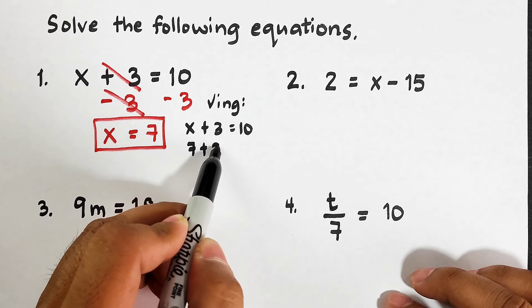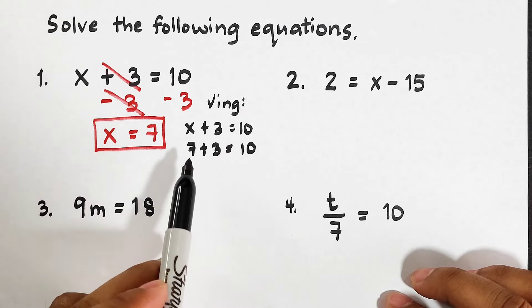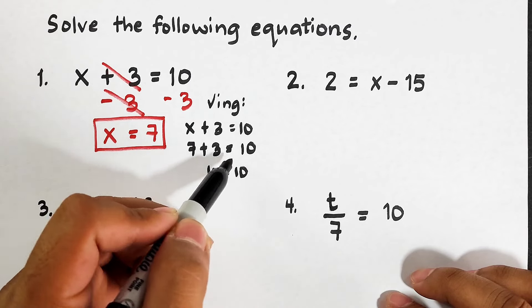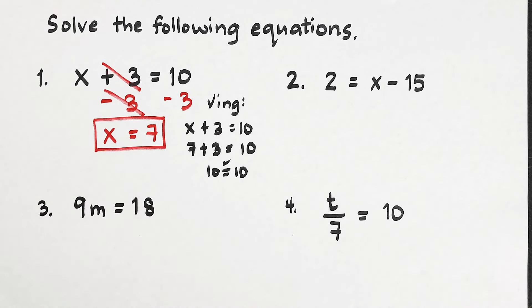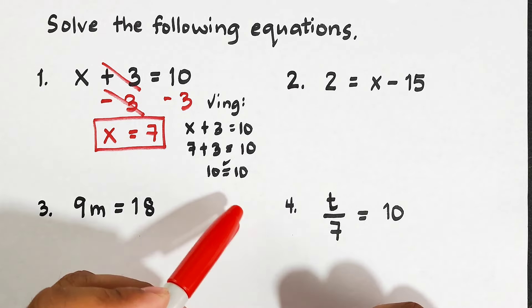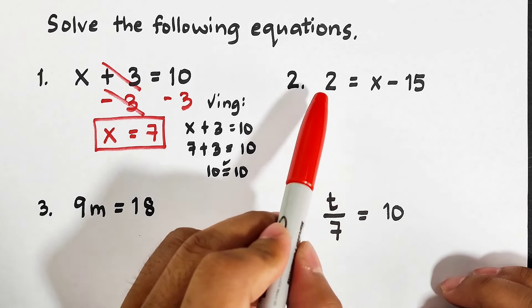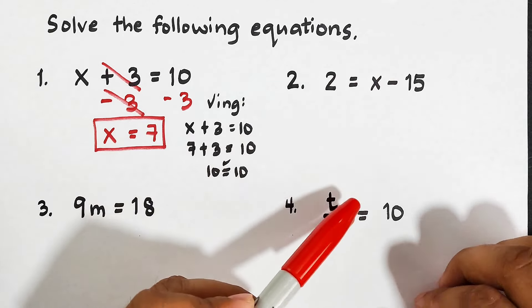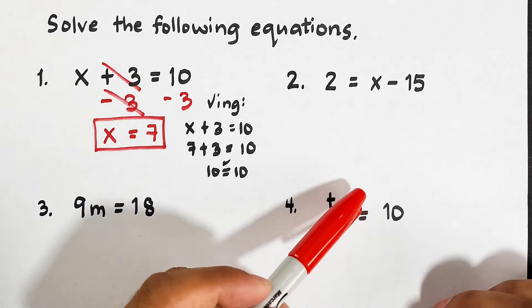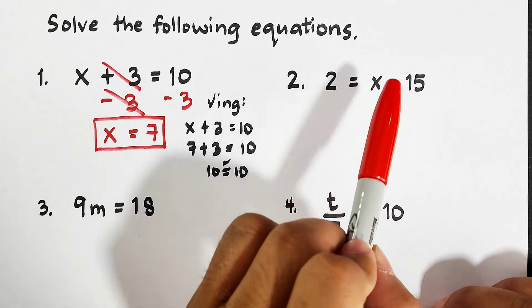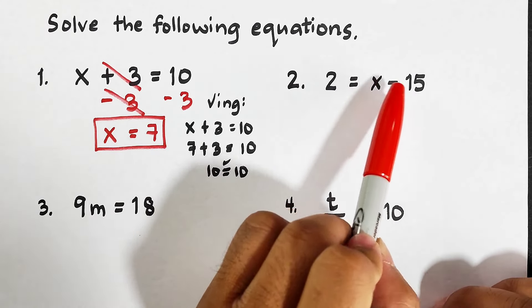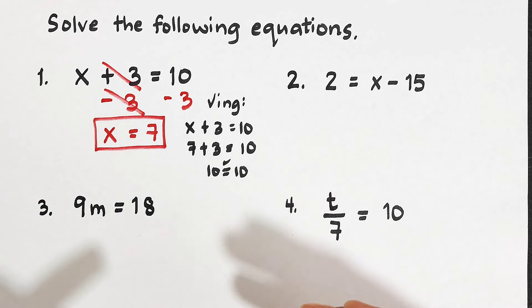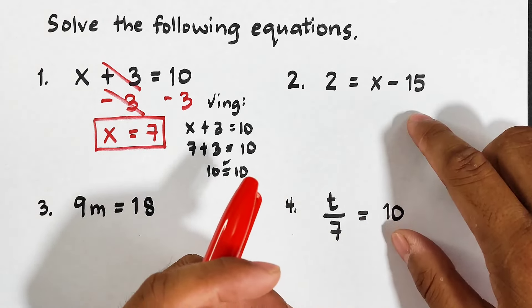What remains is x, and 10 minus 3 is equal to 7. This is the proper way to solve the given equation. Now if you want to check whether your answer is correct, let's use the original equation: x plus 3 is equal to 10. Replace x with 7 — so 7 plus 3 is equal to 10. Both sides of the equation are equal, meaning the answer is correct.